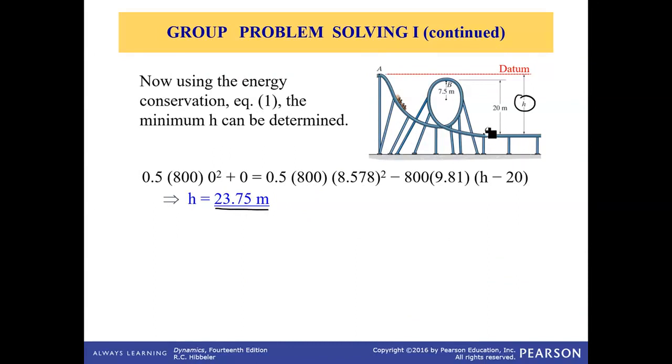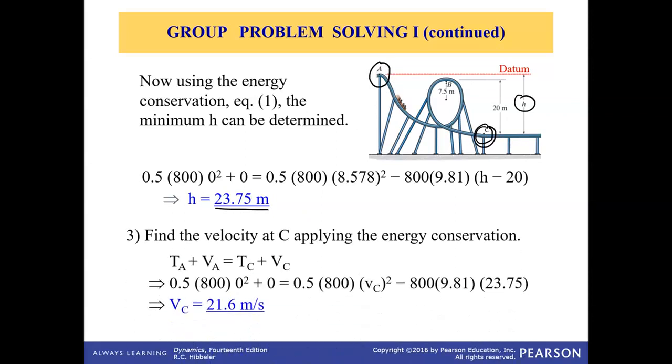And the last step is to calculate the velocity at C, which is very easy because we can apply the conservation of energy between A and C. That is TA plus VA equals TC plus VC. Substitute all the numbers relative to this datum for potential energy as well as kinetic energy, depending on whether it's moving or at rest. For example, at A this is not going, so velocity at A is zero. From that we can calculate the final velocity at C, which is 21.6 meters per second.